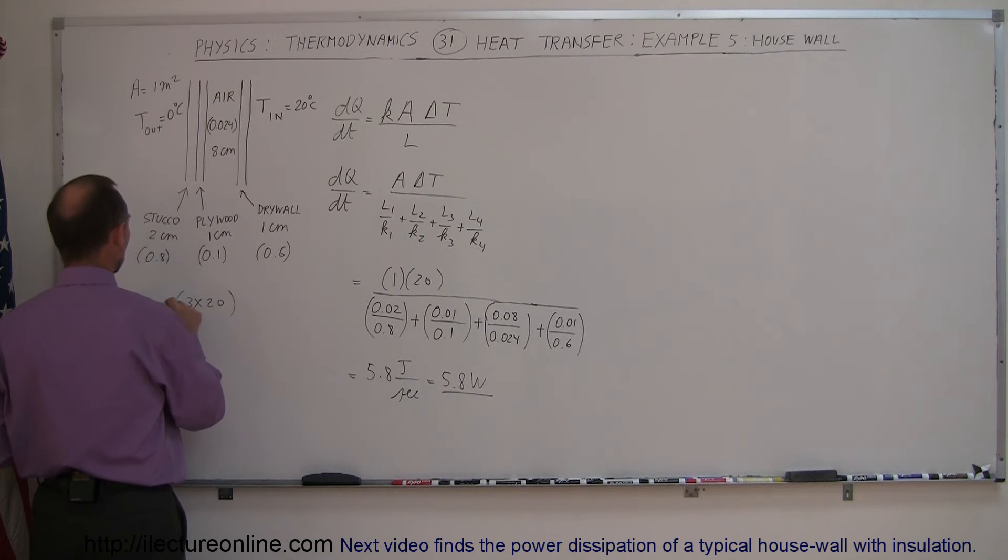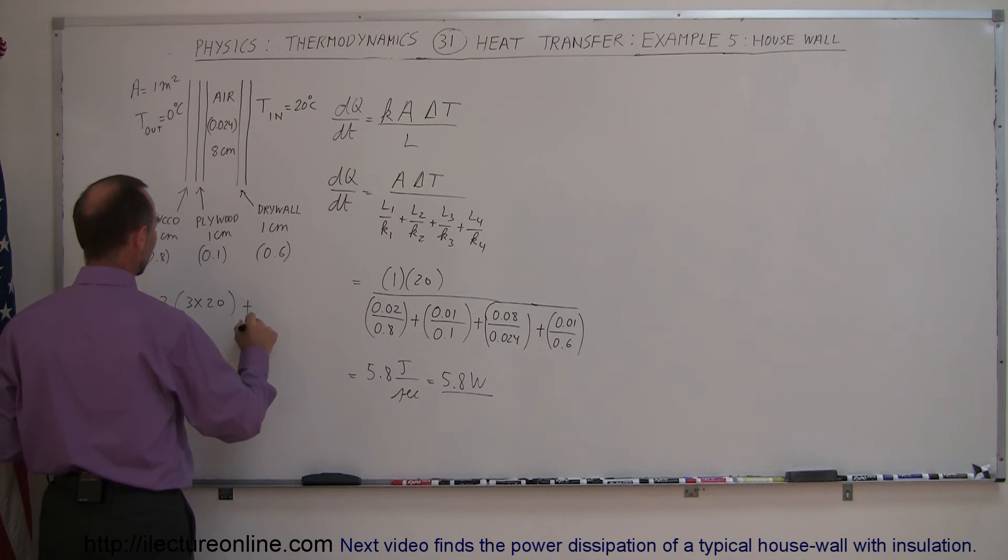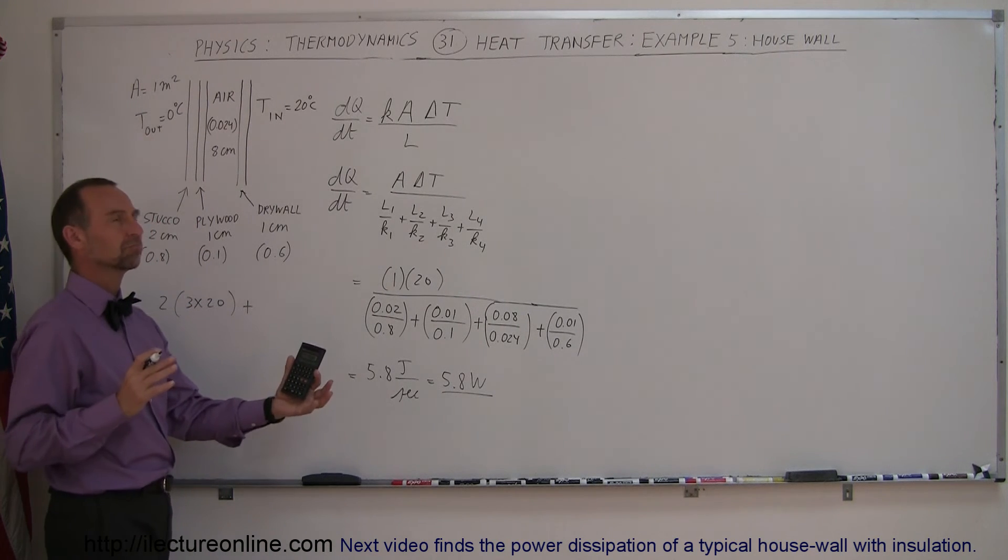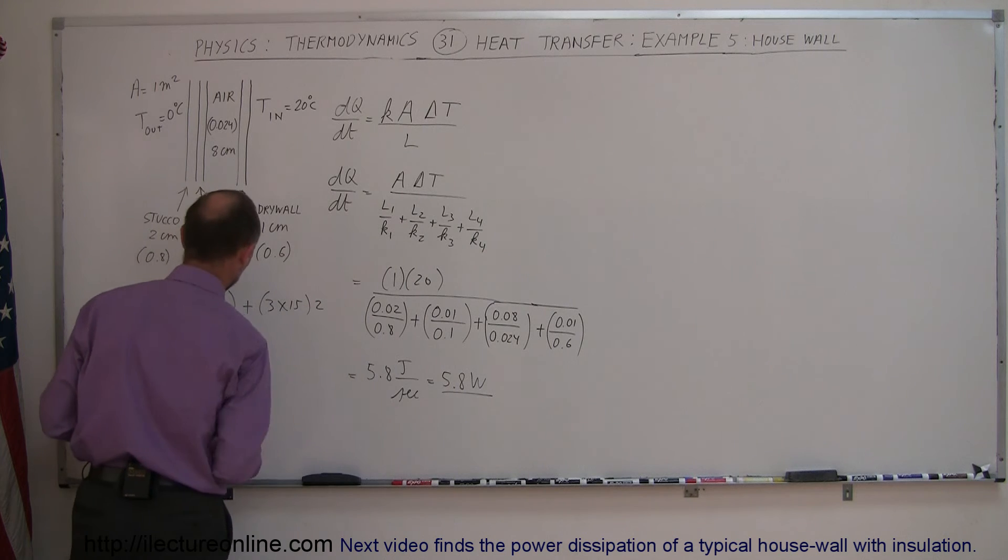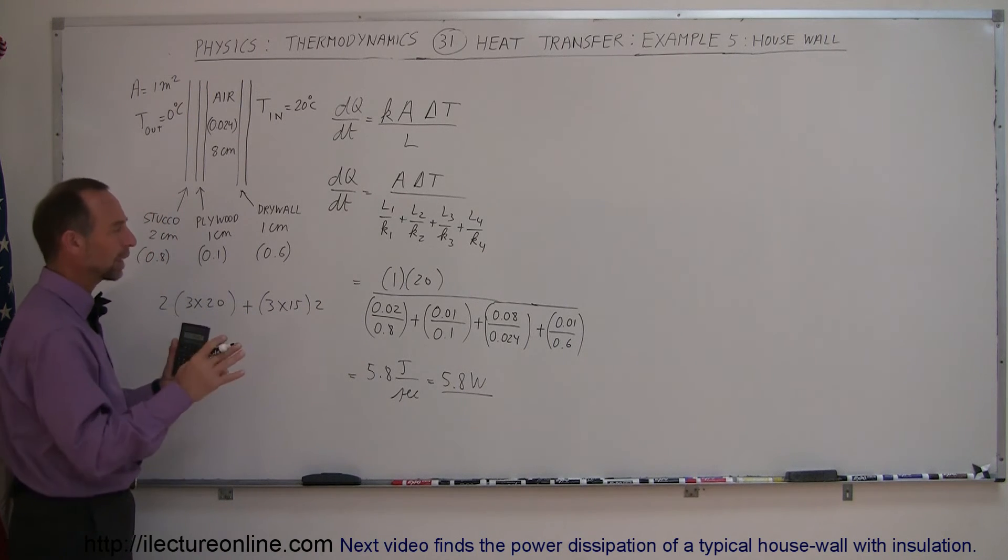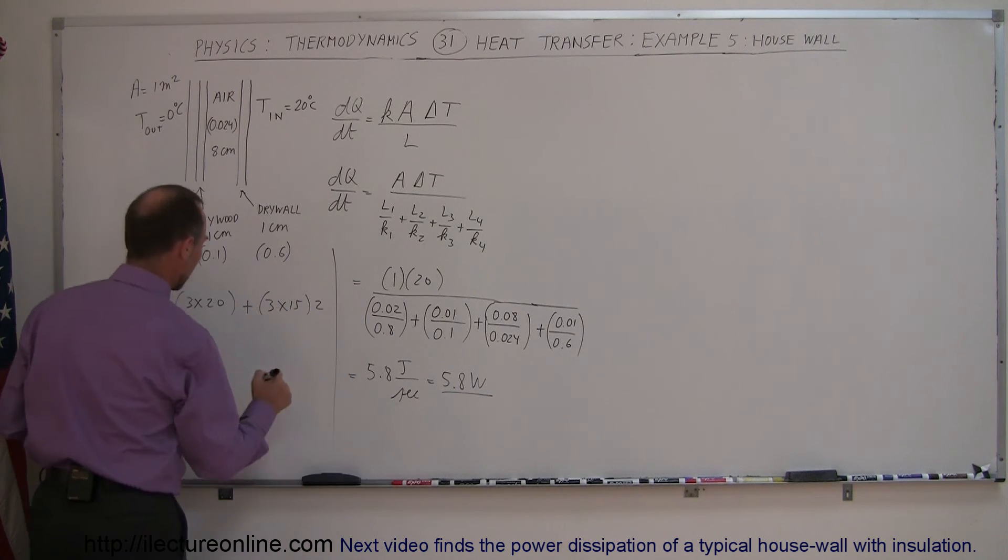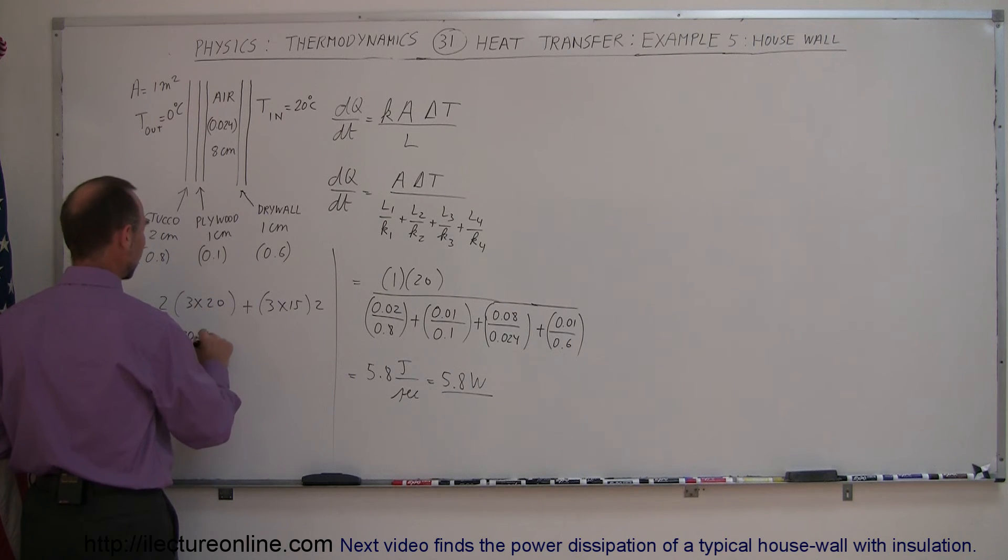So one wall would be 3 by 20, that would be the long wall, and would be two of those, plus the width of the house, maybe 15, so 3 times 15, there would be two walls of that. So I'm just trying to calculate the total area here. So that would be 60 times 2, that would be 120, plus the 45 times 2 is 90, which is equal to 210 square meters.